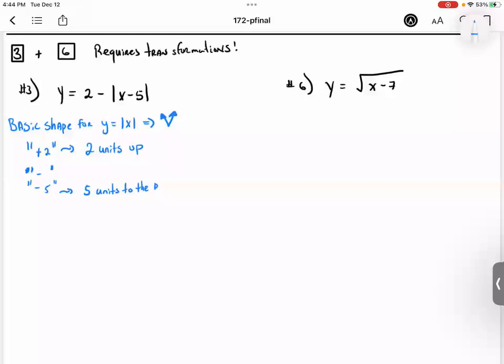To some degree, yeah. And the negative, which is in between the two and the absolute value, that just tells us that we reflect the graph over the x-axis. So when you reflect over the x-axis, your graph will now look like an upside-down V. So using these three transformation rules, I can make my graph for number three.